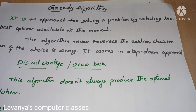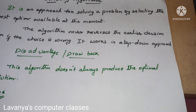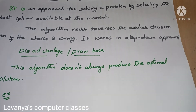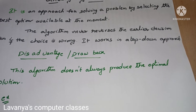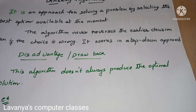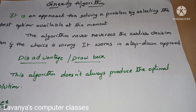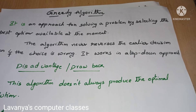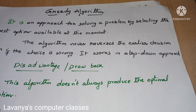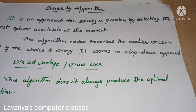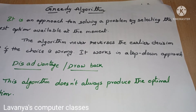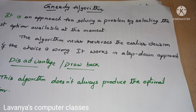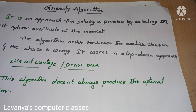The algorithm never reverses the earlier decision even if the choice is wrong. Once we select a choice, even though the choice is wrong, the algorithm never takes it back. At that moment we feel this is the best, and that is accepted. After that if you find one more better solution, it is not accepted. That is one of the drawbacks of greedy algorithm. It works in a top-down approach.